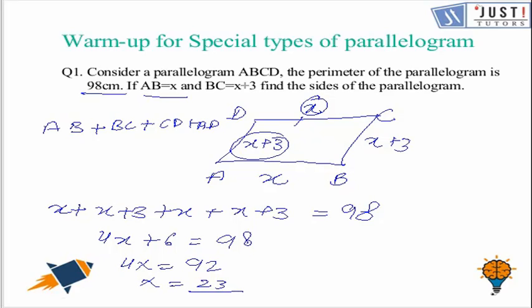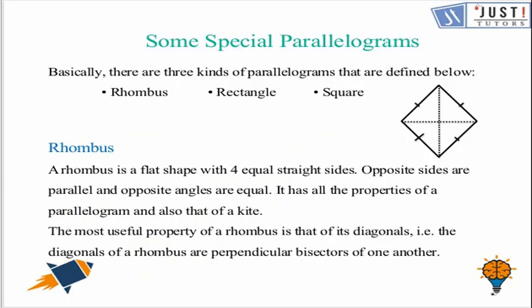So this is the length of side AB of the parallelogram, which is X. So let's move ahead and discuss today's session on special parallelograms. There are three kinds of parallelograms. The first one is a rhombus, second one is a rectangle, and the third one is a square.